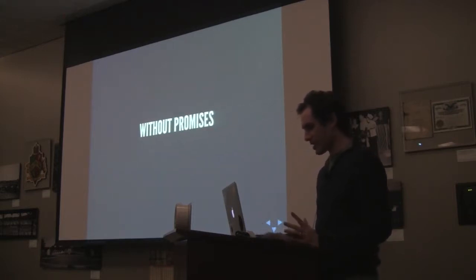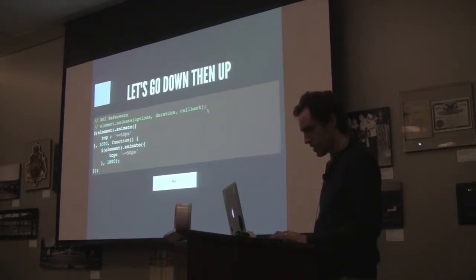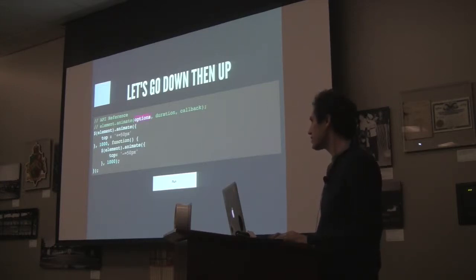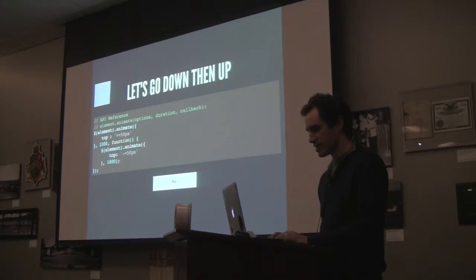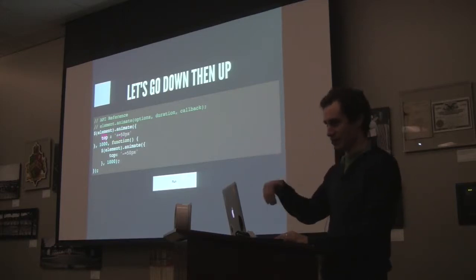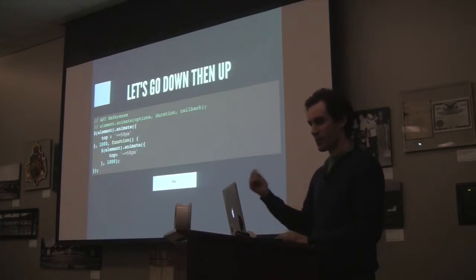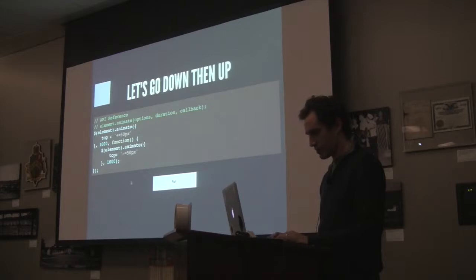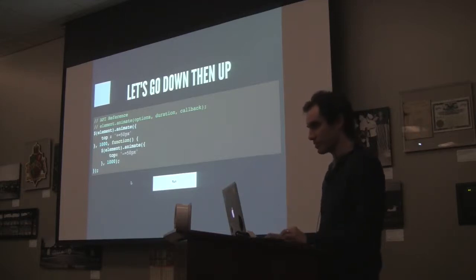We're going to start this simple chain without promises. For those who don't know the API — you wrap the element in jQuery, call animate, pass the options you want to change, the duration, and then the callback. This callback is a function that gets called when the animation is done. For our going-down-and-up example, we wrap the element in jQuery, call animate, add 50 pixels to top which makes it go down, wait a second, then animate back up. This is pretty readable — it's clear what's going on.